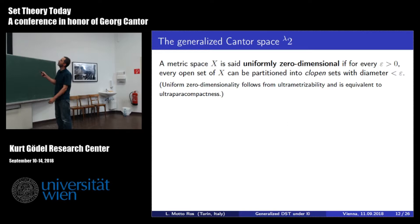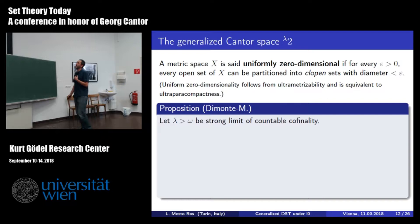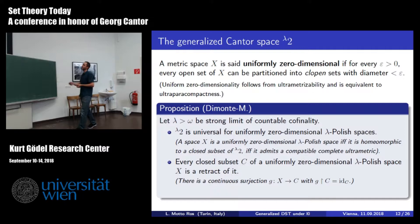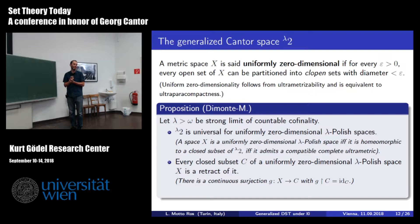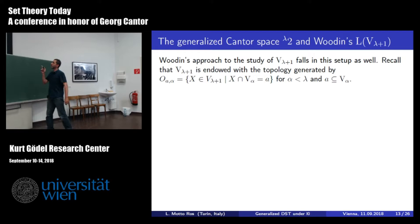You can work with 2^lambda, or more generally with what can be called uniformly zero-dimensional spaces—known in topology as ultraparacompact. In this setup, one can prove that 2^lambda is universal for these uniformly zero-dimensional lambda-Polish spaces, just as the classical Cantor space is universal for zero-dimensional Polish spaces. Other classical results also hold: all closed sets are retracts of the entire space, and every such space is a continuous image of 2^lambda. All the most basic results in classical descriptive set theory carry over, just replacing omega with lambda—exactly what you see in Kechris's book.